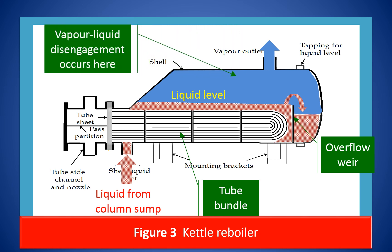The vapor flows to the piping connected to the column through a riser. The liquid overflows the weir and is collected in a compartment in the same shell. This liquid forms the bottom product and is withdrawn under level control.